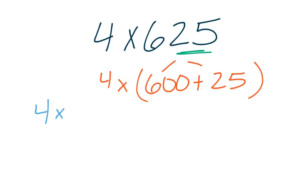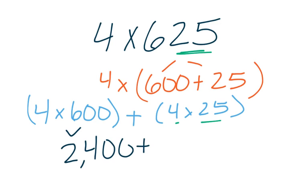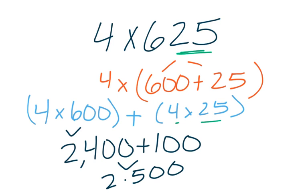Now I have 4 times 600 plus 4 times 25. I see my 4 and my 25 — a nice number to work with. I just need to work these two separate problems out and add them together. 4 times 600 gives me 2,400, plus 4 times 25 is 100. When I add these together, I get 2,500. Using the distributive property, especially when I see that 4 and that 25, is really helpful. I also don't always have to break my number all the way apart — if I see that 25, that can be very helpful.